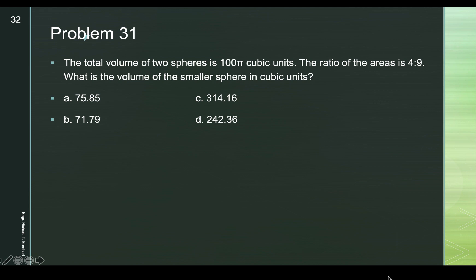Let's continue with problem number 31. The total volume of two spheres is 105 cubic units. The ratio of their areas is 4 to 9. What is the volume of the smaller sphere in cubic units? We know that the volume of a sphere is 4/3 π r³, and the sum of volumes of the two spheres is 105 cubic units.